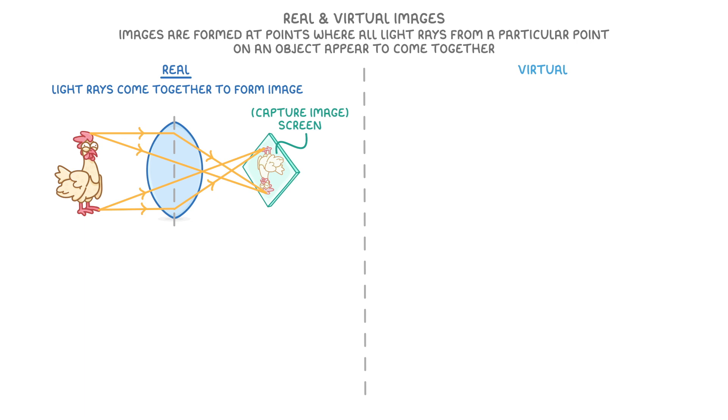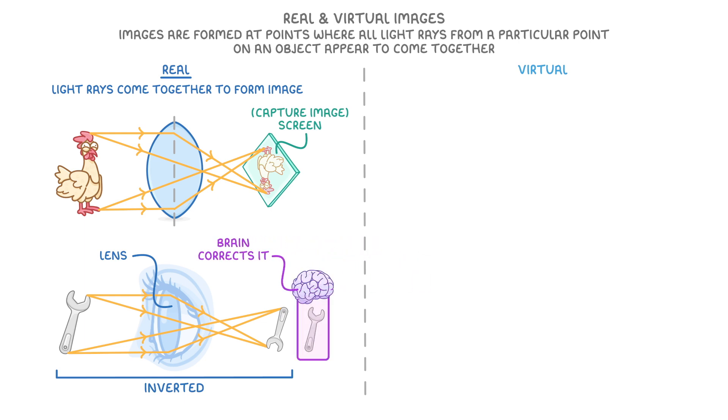To give you some idea of where this happens in real life, whenever you look at a real life object, like a spanner, the light rays from that object pass through the lens in your eye and form a real image on your retina. And it is actually inverted, like this one here. We just don't notice it, because our brain corrects it for us, so that everything appears to be the right way up.